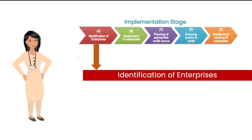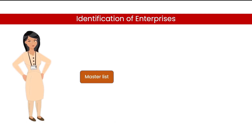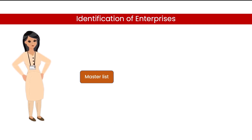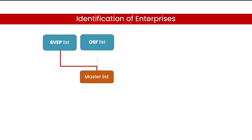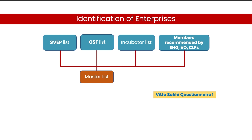Identification of Enterprises for Loans. For identification of enterprises, a master list of potential women entrepreneurs should be prepared. This list can be prepared through the SVEP list, OSF list, Incubator list wherever available, or members recommended by SSGs, VOs or CLFs. With this, a KEYS can then select potential entrepreneurs by checking for SSG eligibility and member eligibility criteria.